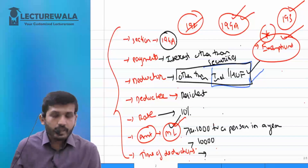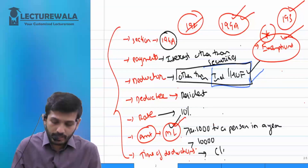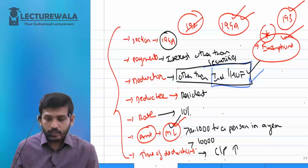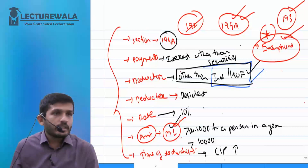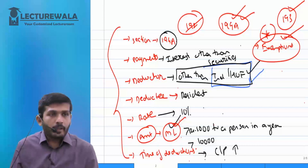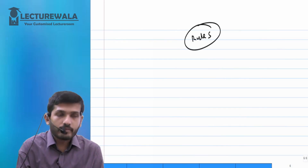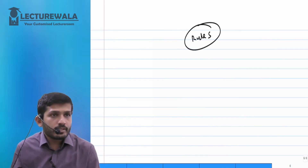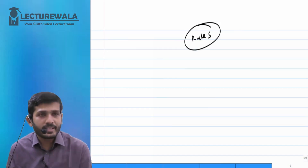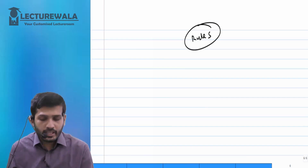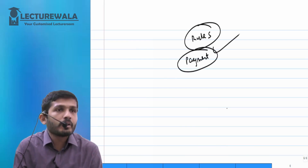Now comes the time of deduction. When should TDS be deducted? The thumb rule is: it should be at credit or payment, whichever is earlier. So whether the amount is credited to the party's account or actually paid — whichever happens first, you must deduct TDS at that point. Rule Number 5: everywhere TDS has to be deducted on credit or payment whichever is earlier — except in certain sections.